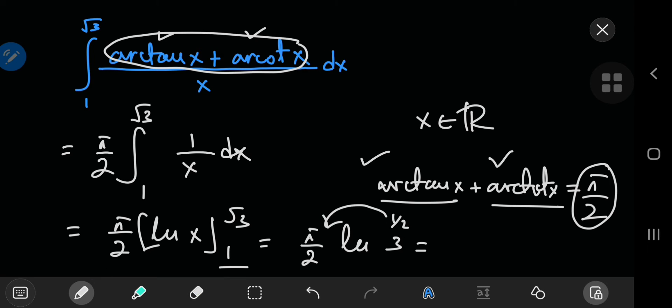You're left with the natural log of square root 3, or 3 to the 1 half, which can be taken as a coefficient of the logarithm. So you have pi by 4 times the natural log of 3.